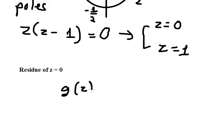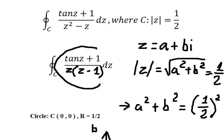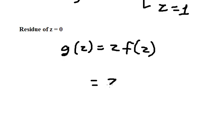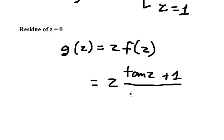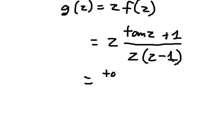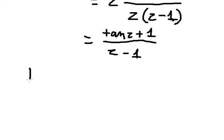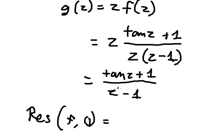We have R(Z) equals Z multiplied by f(Z). We simply find Z times f(Z), which gives us tan(Z) plus 1 over (Z minus 1). Now we can find the residue of f at Z equals 0: we substitute Z equals 0, giving us 0 plus 1 over (0 minus 1), which equals negative 1.